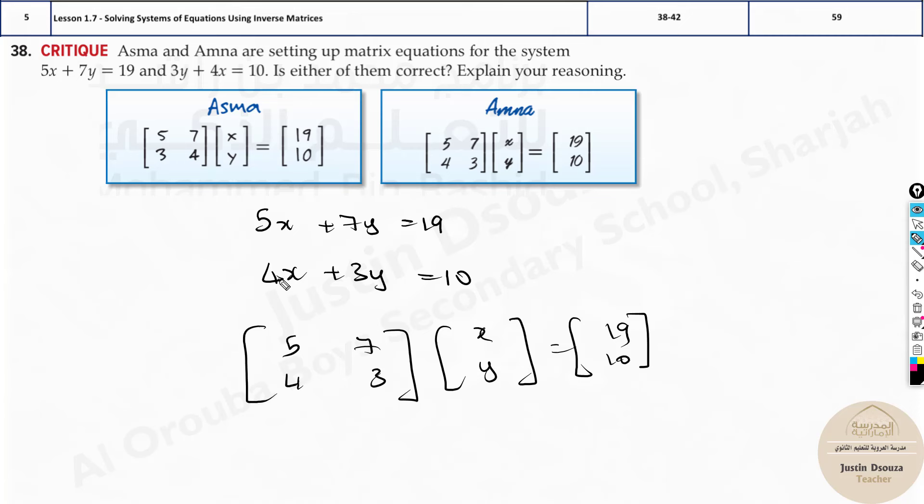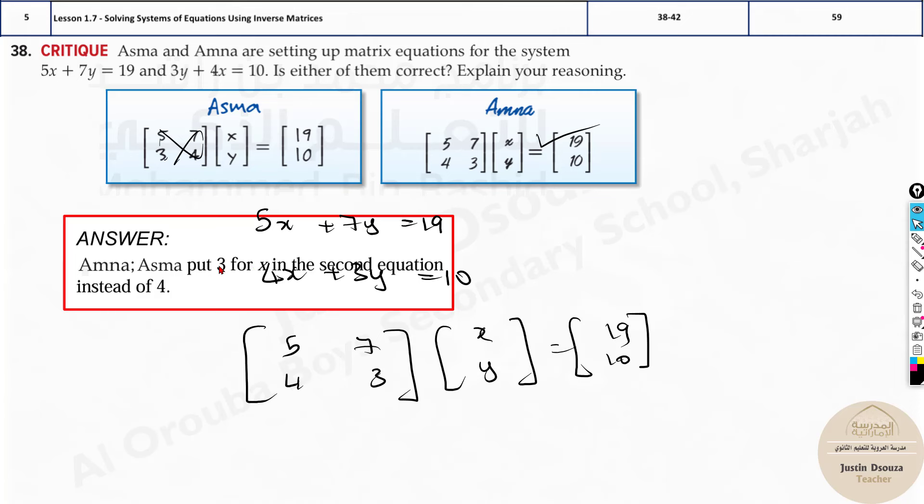Now who has written it like this? See, this is wrong. Why? She has written 3 first and then 4. This is wrong. Amna must be correct then. Yes, this is correct. That's it. Why? Because the variable x and y has been swapped by Asma. Because she put 3x, 4x in the second equation instead of 4. That's the answer.